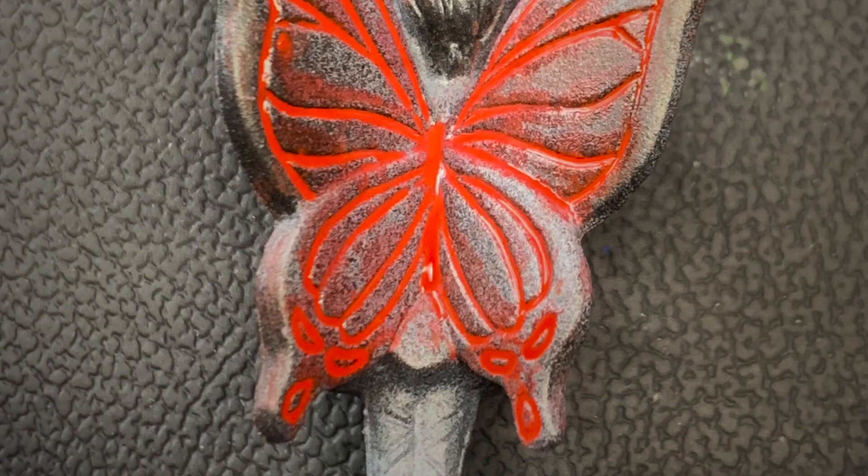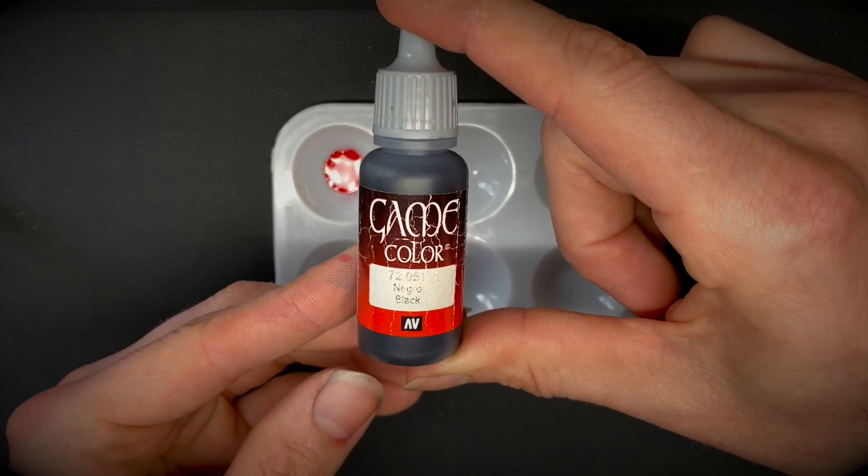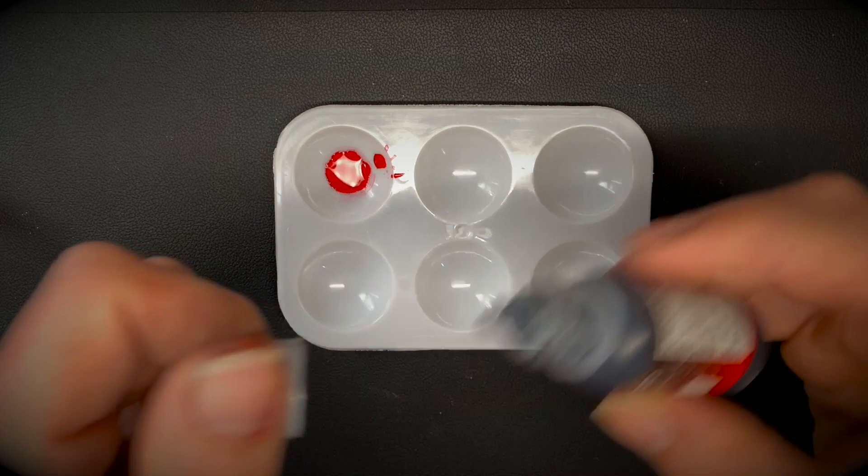And now on to Vallejo's Game Color range, black. The black wash is often used - there's other things such as non-oil inks that you could use. I usually start off with a good black wash.